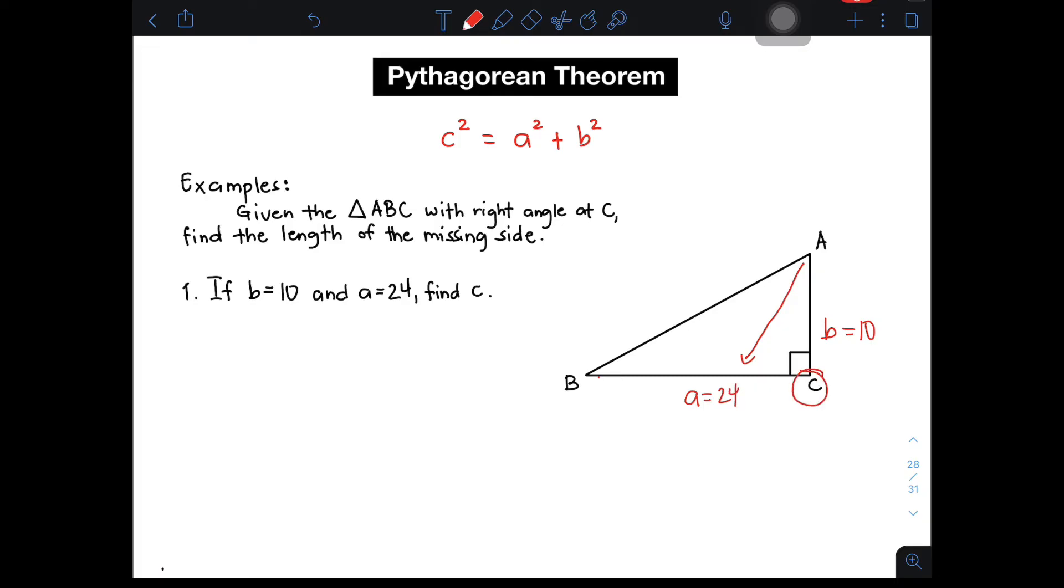And then, given this angle C, para malocate natin ang iyong side C mo, puntahan mo lang itong right angle mo or angle C mo, and then, yung opposite side niya, this is your side C. And ito yung nawawala sa atin, which is yung ating hypotenuse. Since ang nawawala ay hypotenuse, we can directly use the formula C squared is equal to A squared plus B squared.